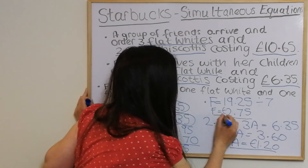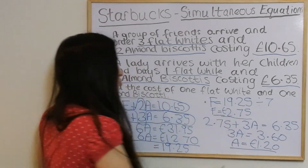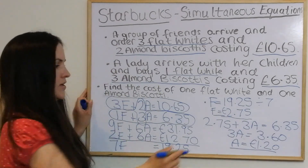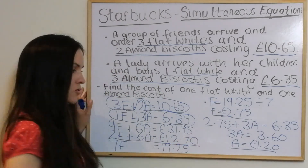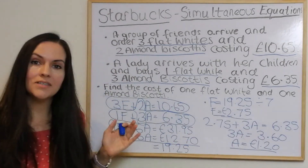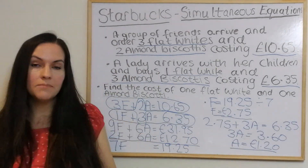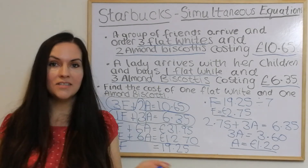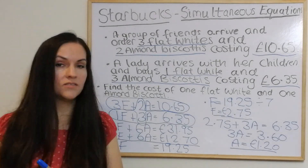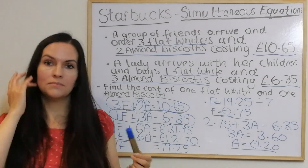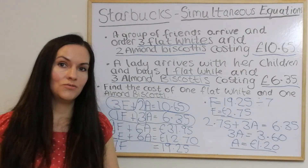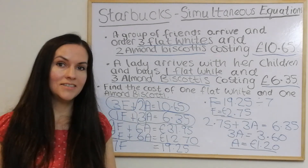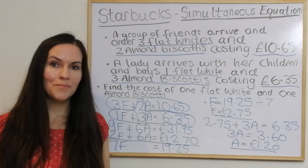So there we go — one flat white is two pounds seventy-five and one almond biscotti is one pound twenty. Please like and subscribe, and feel free to suggest any other maths videos you'd like to see as part of the Starbucks range. See you in the next video, bye!